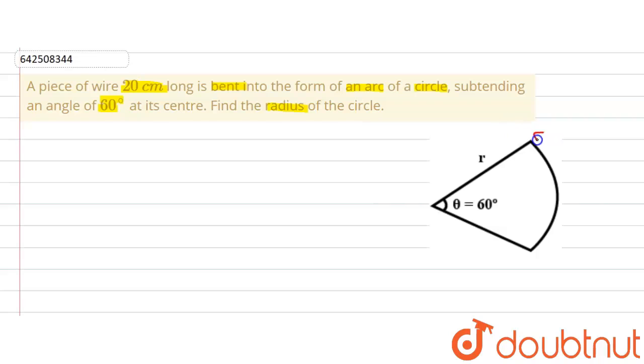Now, we are given the length of arc because this length is equal to length of the wire, that is 20 cm. So the length of the arc is given, that is L, is equal to 20 cm.